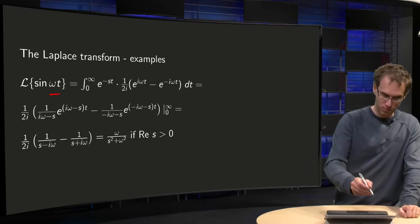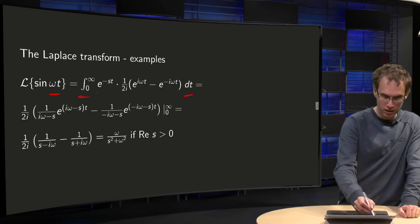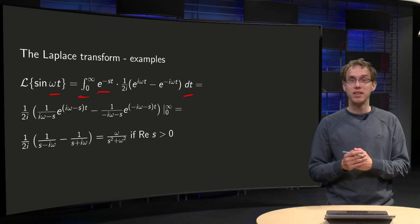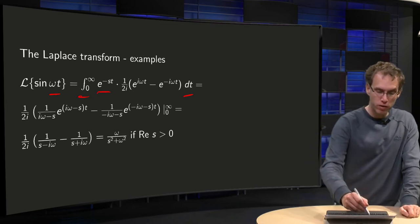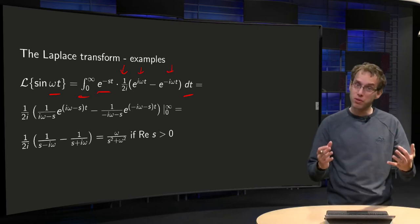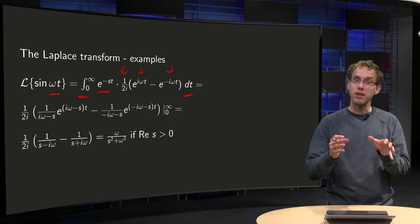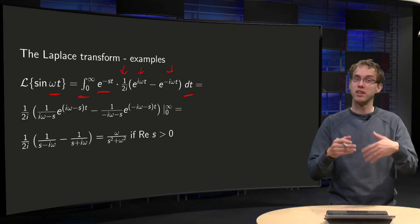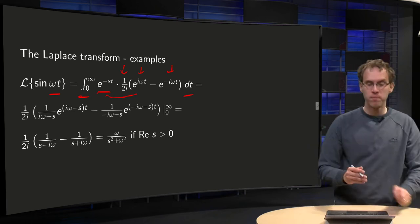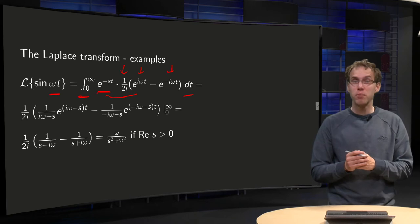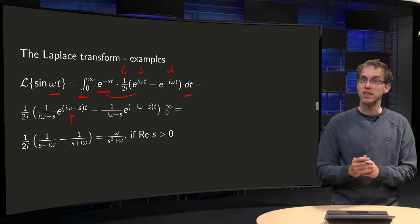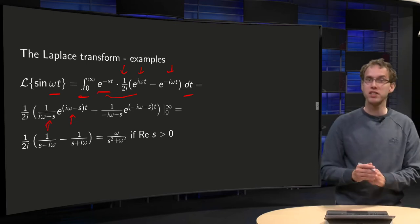You know how to compute it. If you want to integrate with respect to t, you add e to the power minus st and write sine of ωt as 1 over 2i times (e to the power iωt minus e to the power minus iωt). Because if you write it in this way, you get two exponentials, and integrating exponentials is easy. You get e to the power minus(s + iω)t, and integrating gives e to the power (iω − s)t divided by (iω − s).